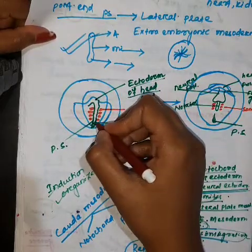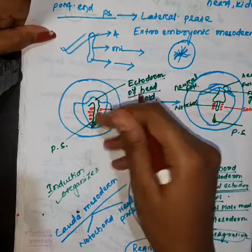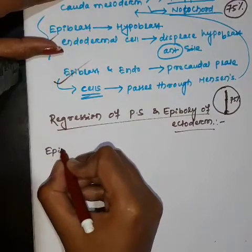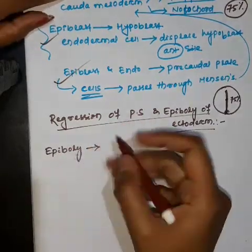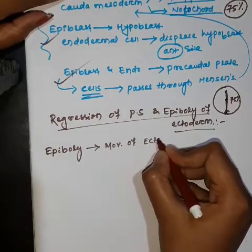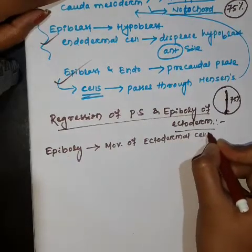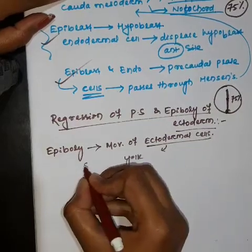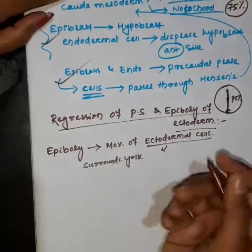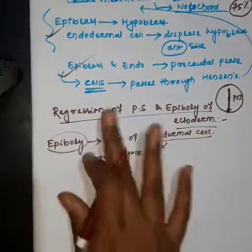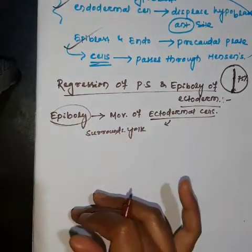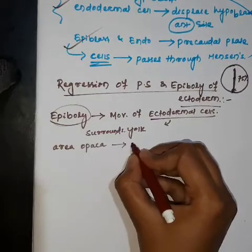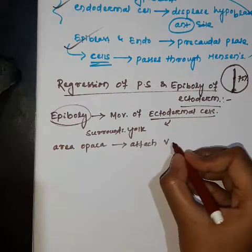The ectodermal cells migrate to surround the yolk because of epiboly. Epiboly means the movement of ectodermal cells — the ectodermal cells surround the yolk. The cells of the outer margin of the area opaca remain firmly attached to the vitelline envelope.